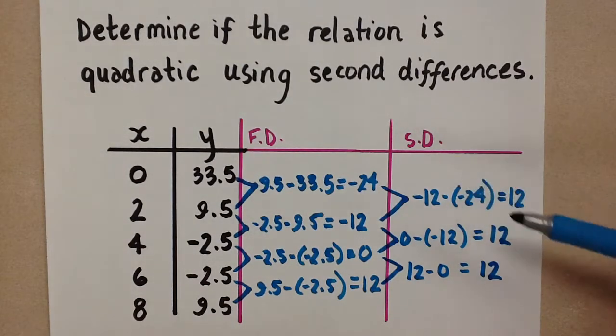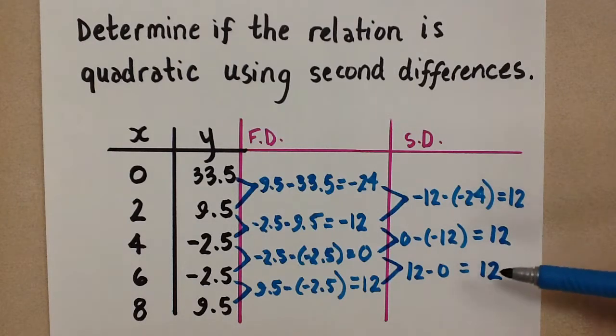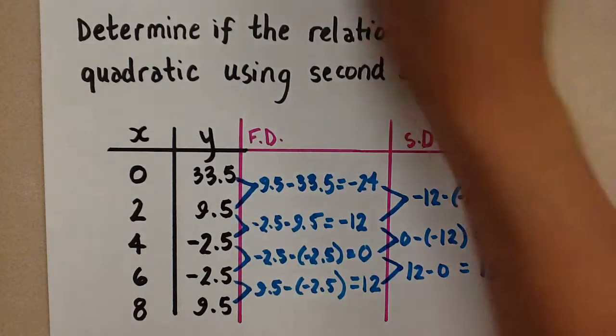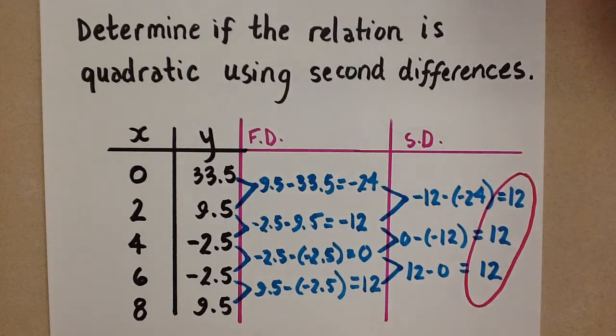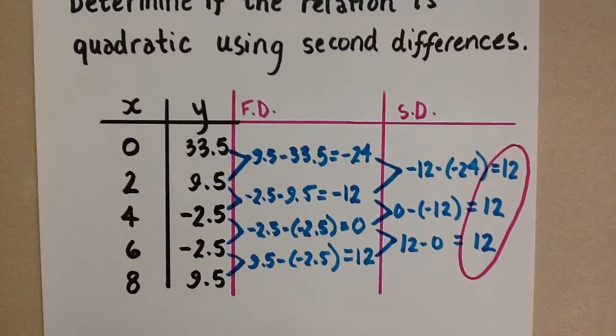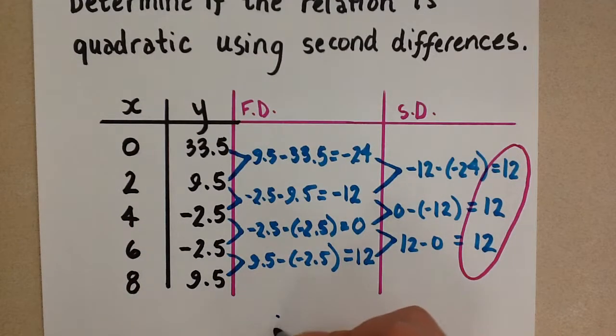And so now notice in our second differences column, we got all of the same number for the second differences. And when this happens, we know that we have a quadratic relation. So because the second differences are all equal here, this is a quadratic relation.